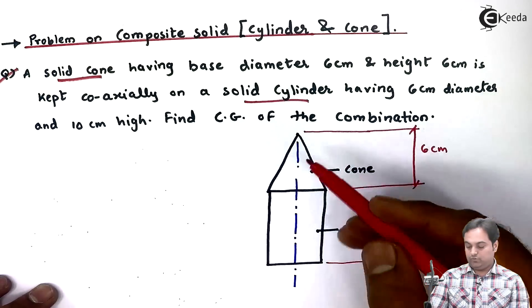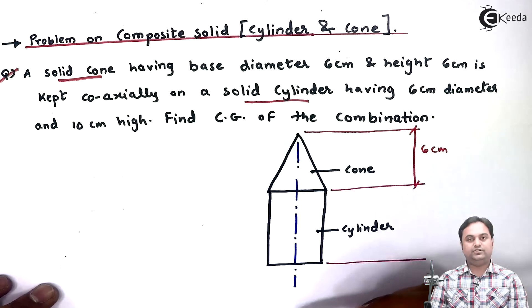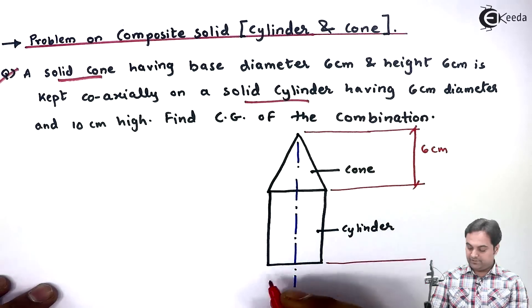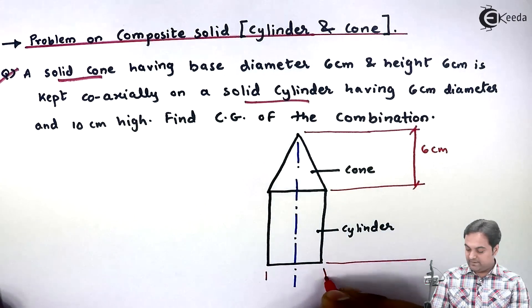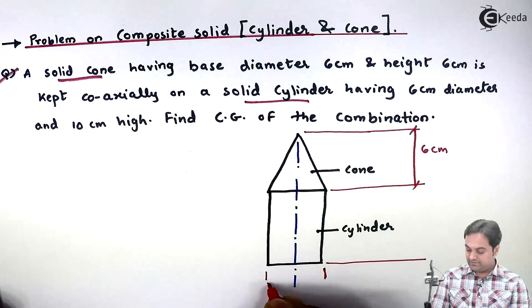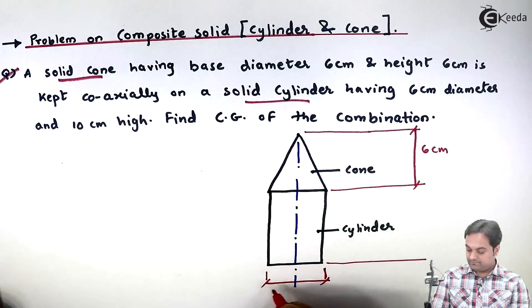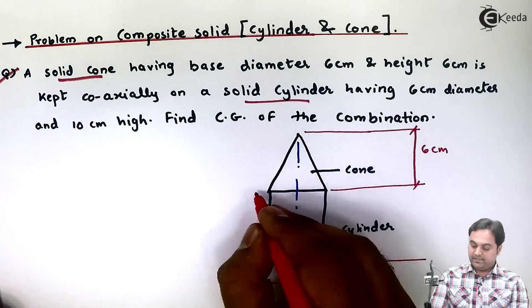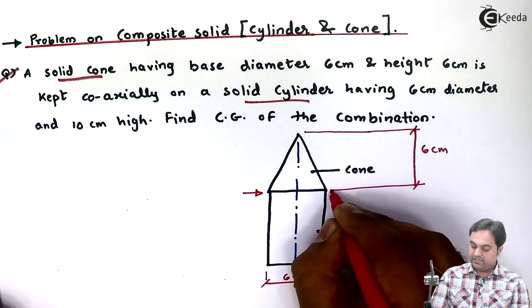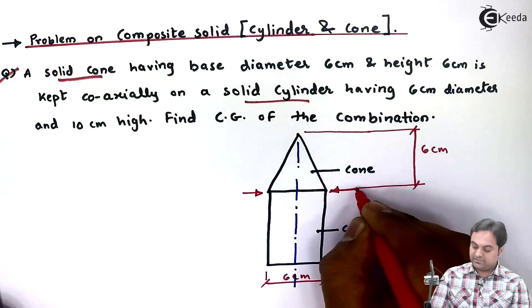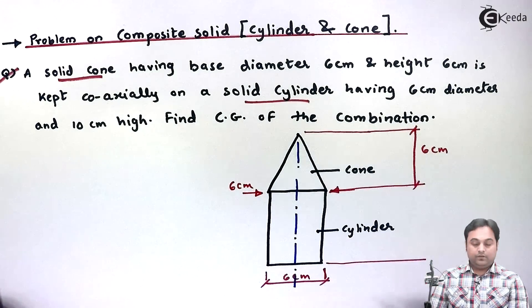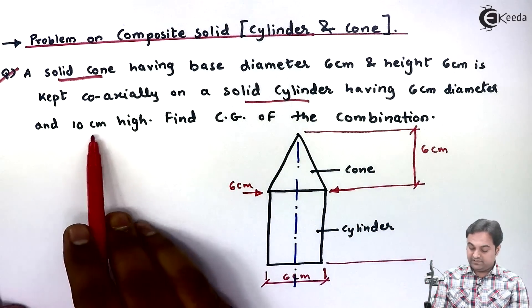It is kept coaxially. Coaxially means axis of both the solids are same on a solid cylinder having 6 centimeter diameter. So the diameter of the cylinder is 6 centimeter. And as we can see the diameter of the cylinder and the base diameter of the cone, they are same. This is also 6 centimeter. Now height of the cylinder is 10 centimeter.